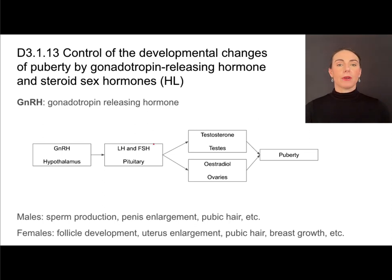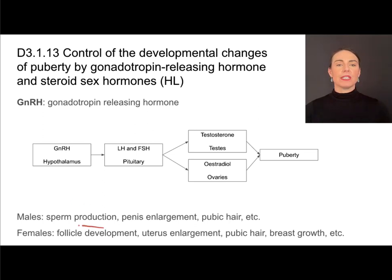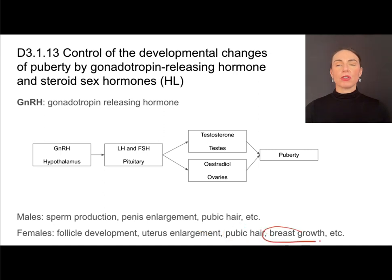In females, LH and FSH are going to act on the ovaries, and they're going to stimulate the ovary to release estradiol. This is going to be a type of estrogen, and that is going to cause puberty in females, which will result in the development of the follicle during the ovarian cycle, the enlargement of the uterus, the growth of pubic hair, breast growth, and other secondary sex characteristics.